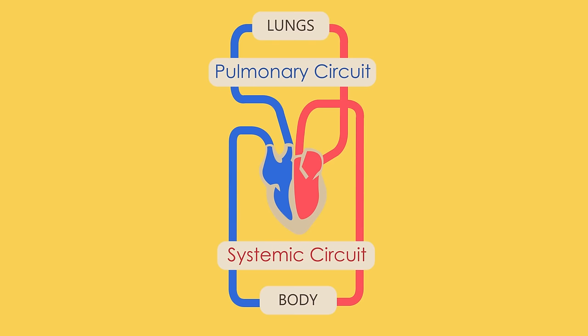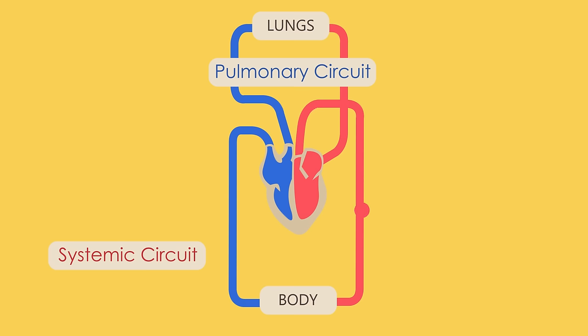In the pulmonary circuit, deoxygenated blood is pumped from your heart to your lungs to become oxygenated. In the systemic circuit, this oxygenated blood that is returned to the heart is pumped to the rest of your body.